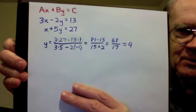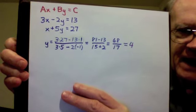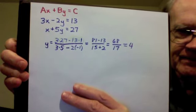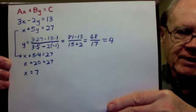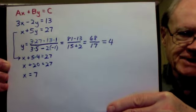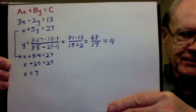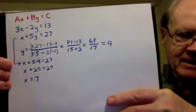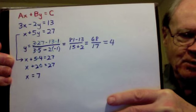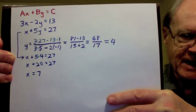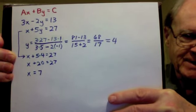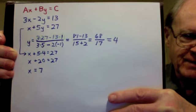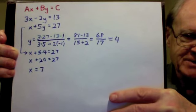And so this tells us that y equals 4. Then I substitute that value of y into one of the original equations. I choose the second one. It looks a little bit easier than the first. And I have x plus 5 times 4 equals 27. That is, x plus 20 equals 27. I subtract 20 from both sides of the equation, and I have x equals 7.